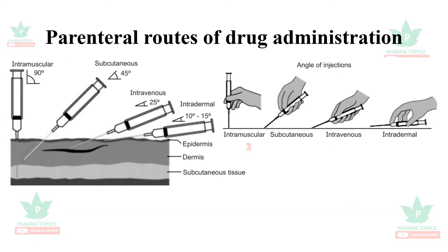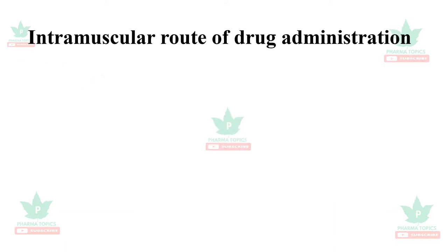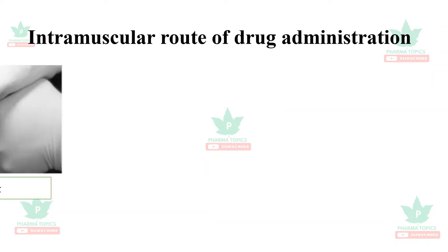Let us see the parenteral routes of drug administration. A 90-degree injection is intramuscular; subcutaneous is at a 45-degree angle; intravenous is at 25 degrees or less; and 10 to 15 degrees is intradermal injection. You can see on the right side the angle of injection. The first parenteral route is the intramuscular route.